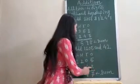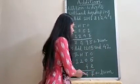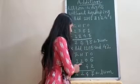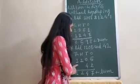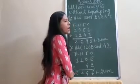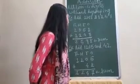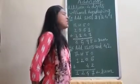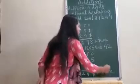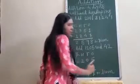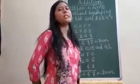Now five plus two is seven, four plus zero is four. Here there is nothing, so two remains as it is, and same way one also remains as it is. So the answer is 1247. The answer of the addition is called sum. I hope everybody is clear.